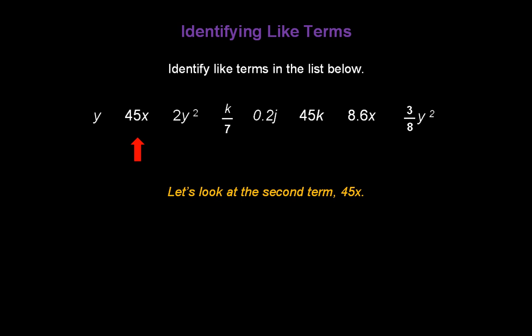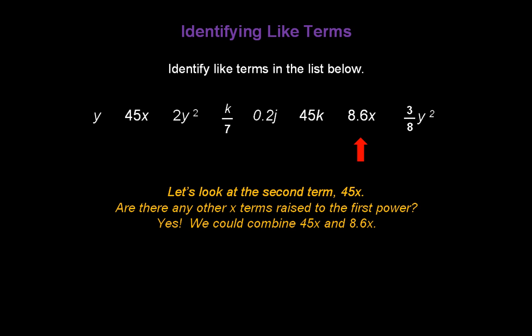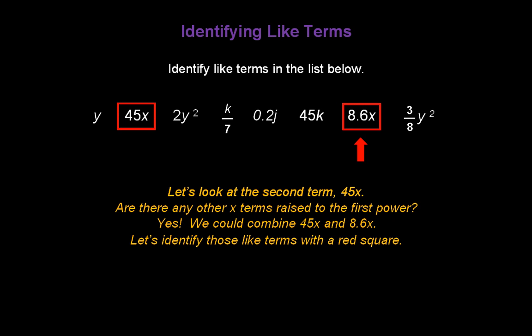Now let's look at the second term, 45x. Are there any other x terms raised to the first power? The next terms are a y, a k, a j, another k — then an x to the first power. So we could combine 45x and 8.6x. Let's identify those like terms with a red square. The last term is a y term, so it's not a like term either.